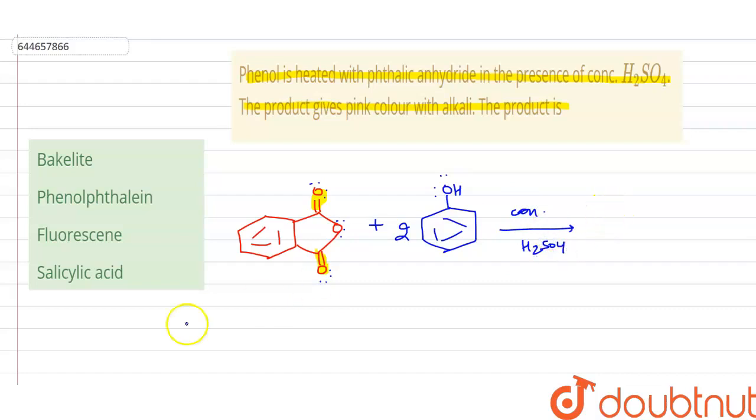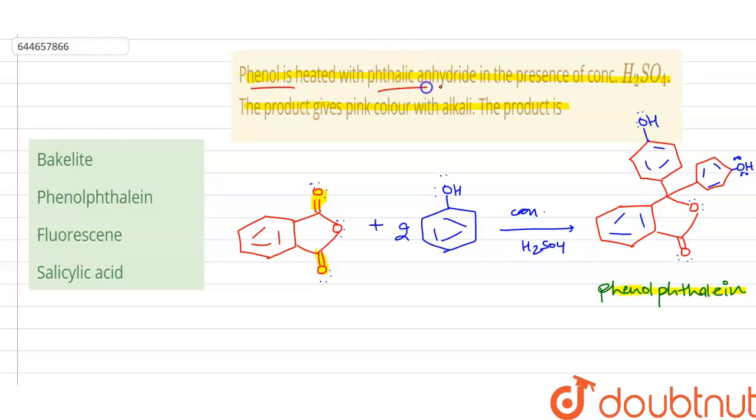It gives the formation of phenolphthalein. So whenever phthalic anhydride reacts with phenol in presence of concentrated sulfuric acid, it gives the formation of phenolphthalein.